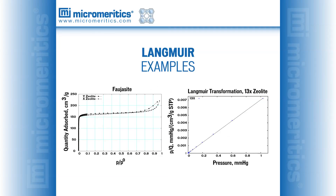Here is an example of nitrogen adsorption on a typical zeolite. Types X and Y zeolites are commonly referred to as faujasite, and Type X is commonly named 13X. They both exhibit the typical Type I isotherm. Using the Langmuir transform, it is easily observed that the plot of pressure divided by quantity adsorbed versus pressure yields a linear relationship as predicted by the Langmuir equation.